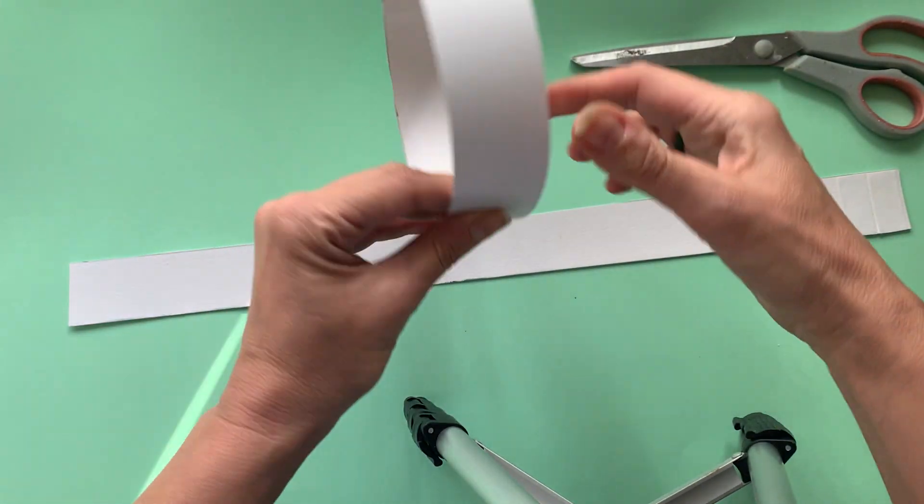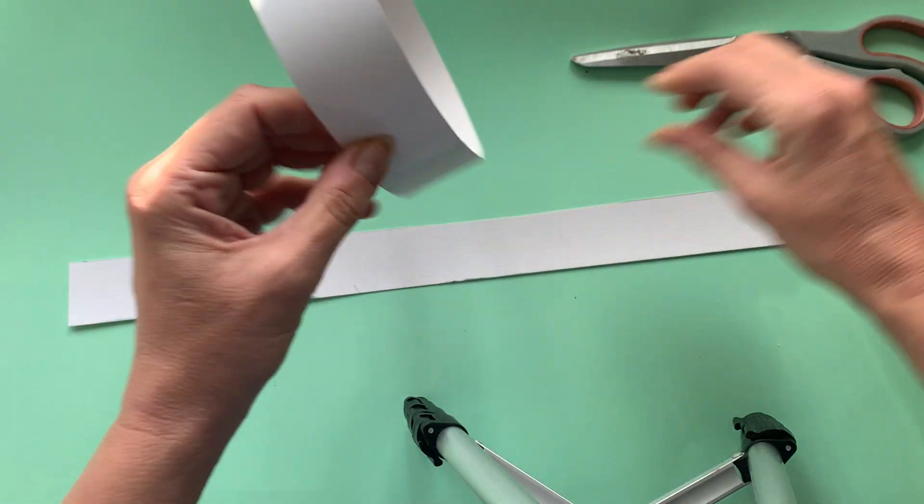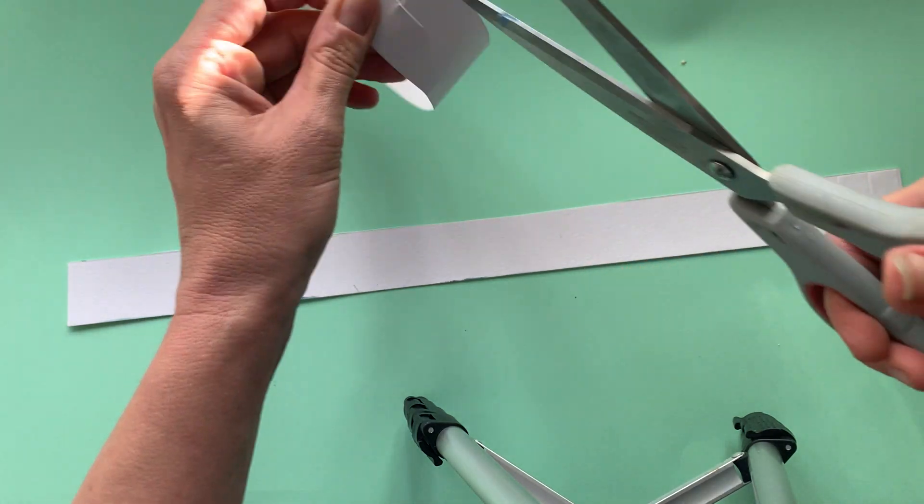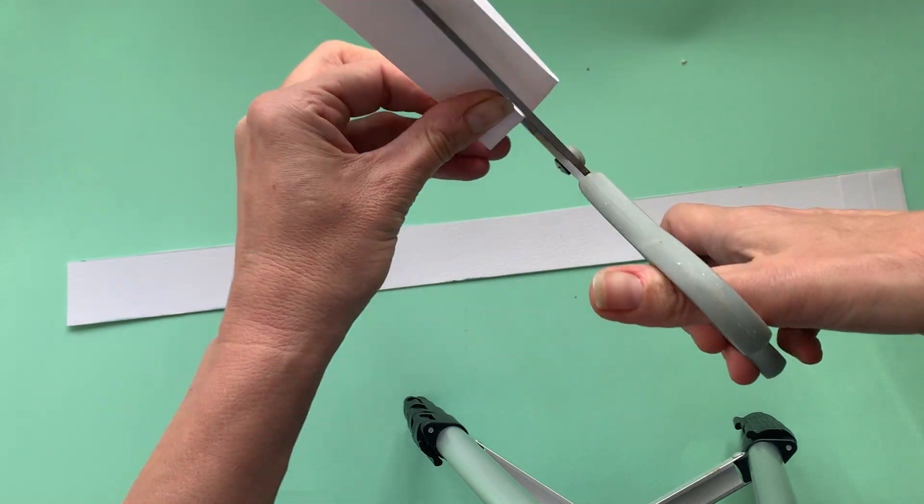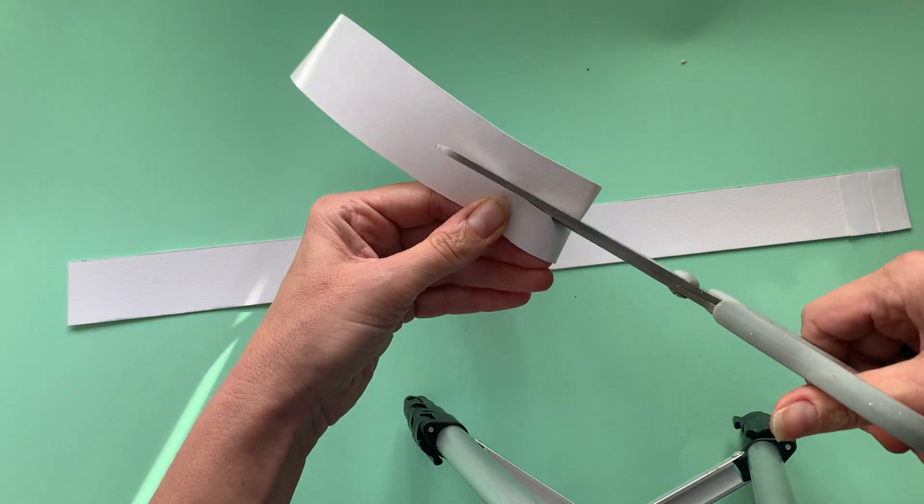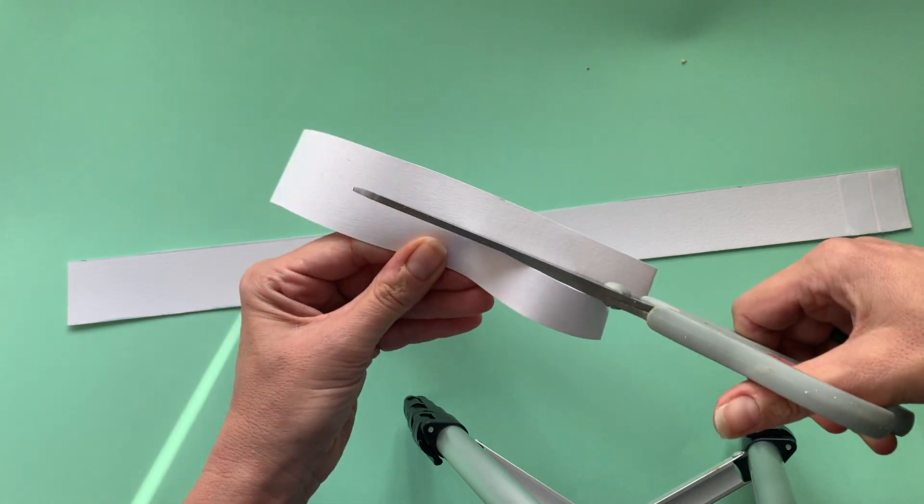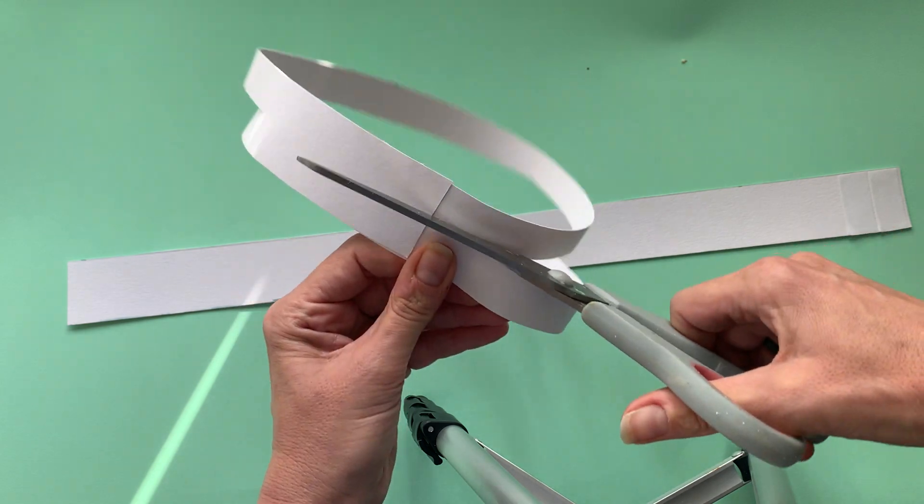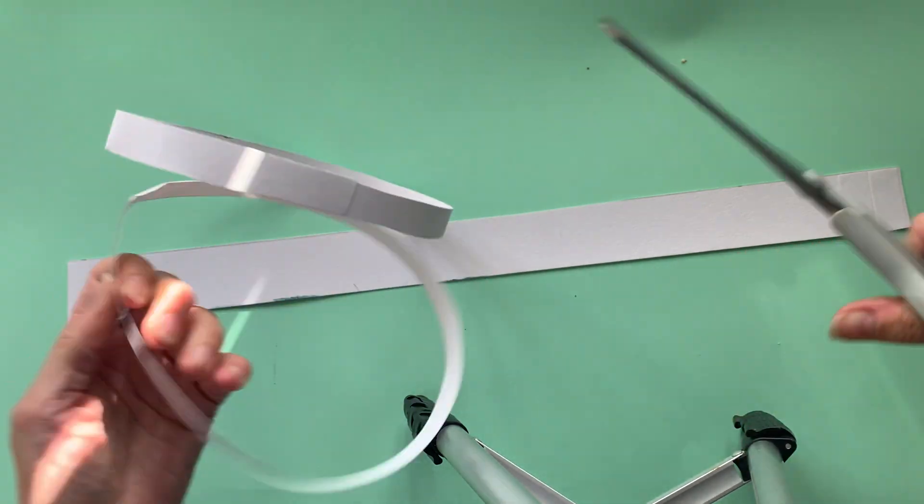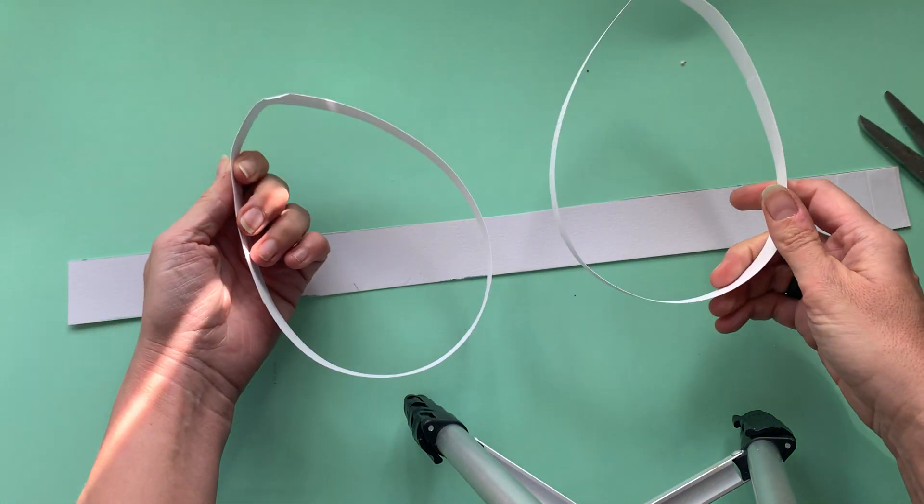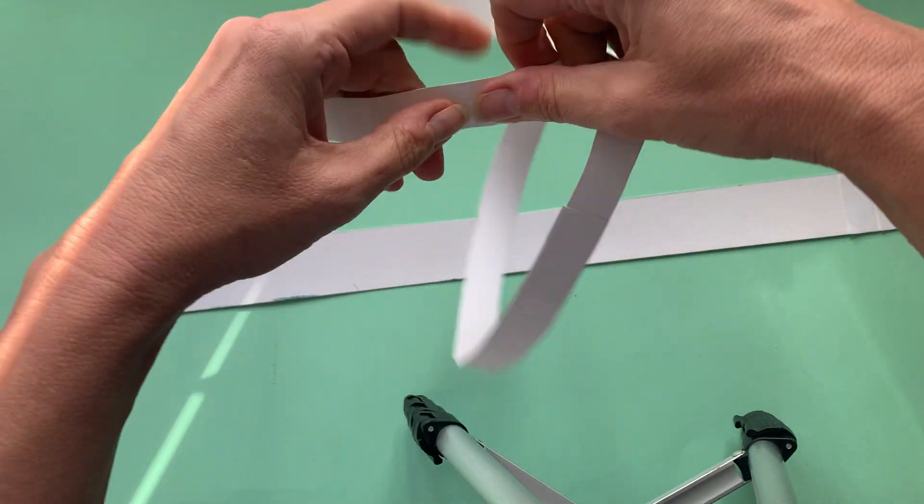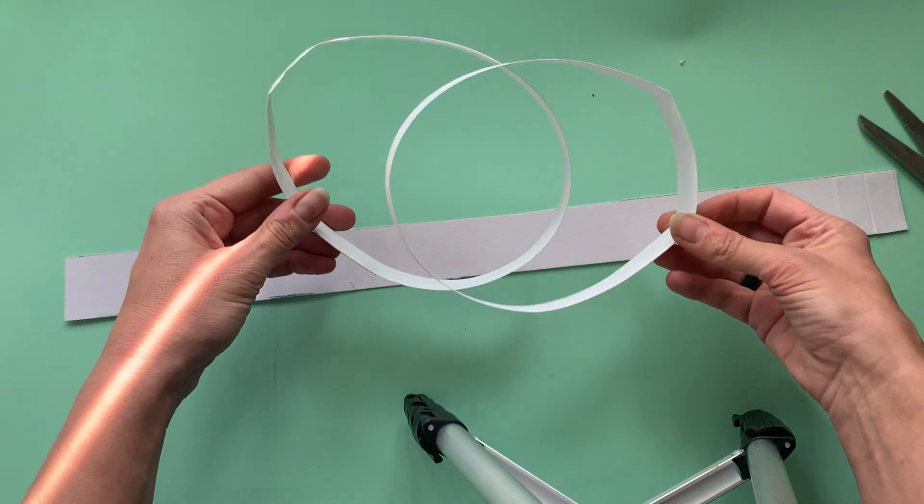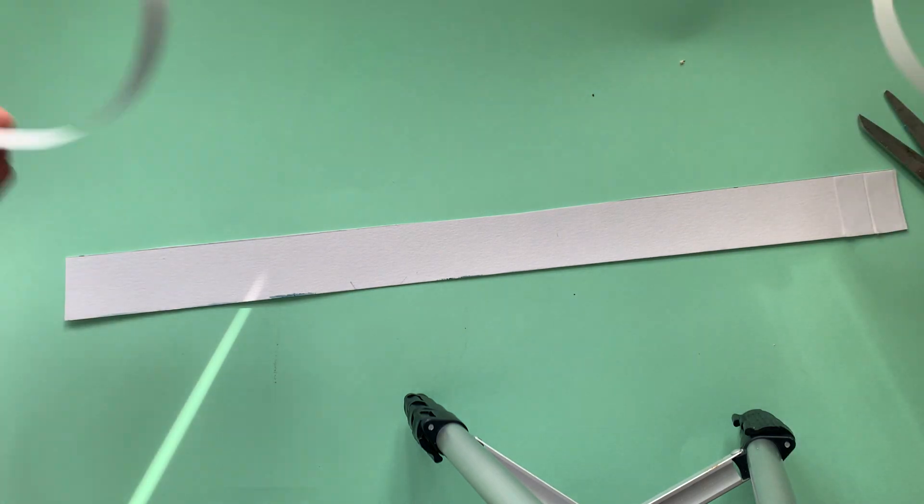We're going to cut it down the middle to demonstrate a control. So cutting it down the middle, what am I going to end up with? We're going to end up with two loops, two completely separate loops. So one has become two. That was quite obvious, wasn't it?